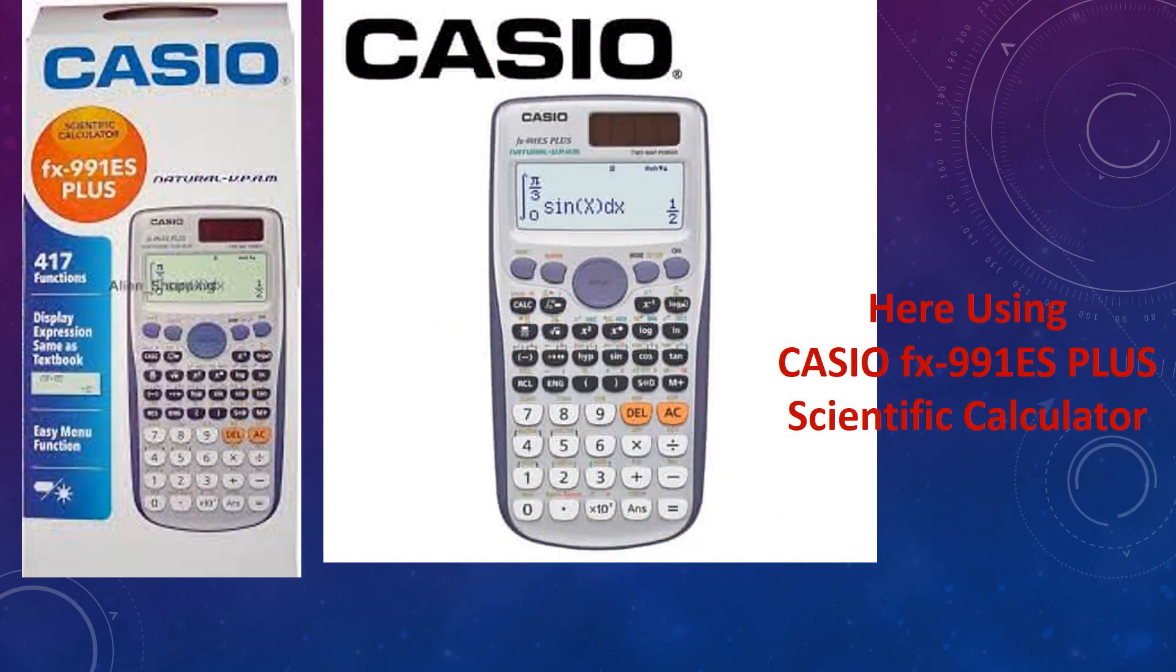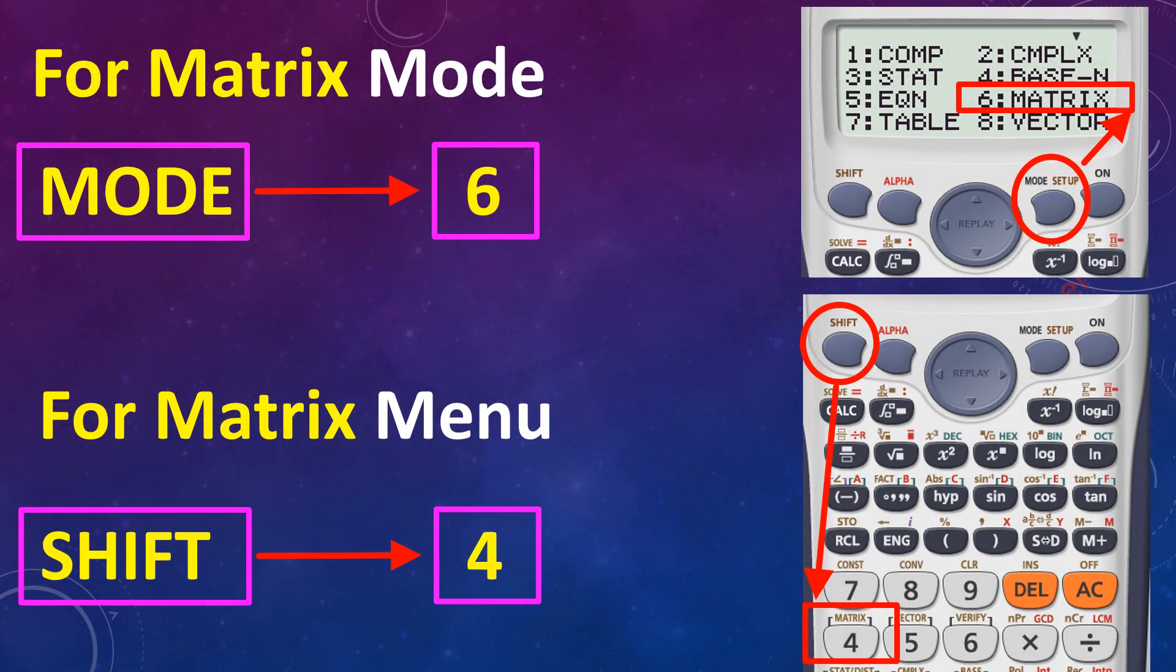Here using Casio FX 991 ES Plus Scientific Calculator. Here two things are very important: Number 1, Matrix Mod; Number 2, Matrix Menu.